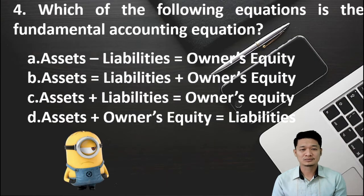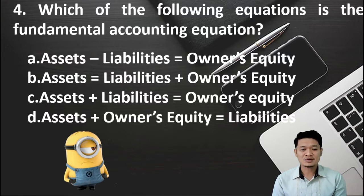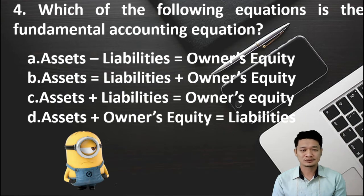For number 4: Which of the following equations is the fundamental accounting equation? Letter A, assets minus liabilities equals owner's equity. Letter B, assets equals liabilities plus owner's equity. Letter C, assets plus liabilities equals owner's equity. Or letter D, assets plus owner's equity equals liability.